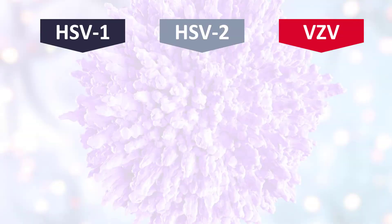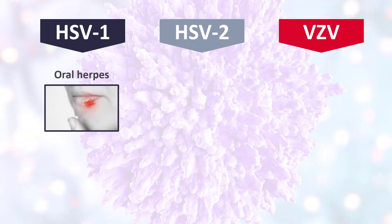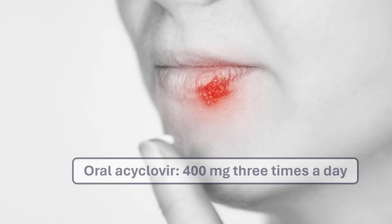Regarding the dosing: the most common infections caused by herpes viruses are oral herpes, usually caused by herpes simplex virus 1, and genital herpes, usually caused by herpes simplex virus 2. For these infections, the usual dosing is 400 mg of oral acyclovir 3 times a day for adults.